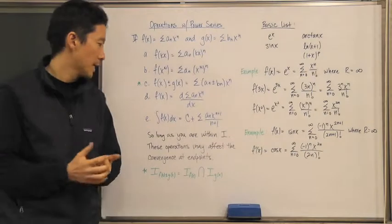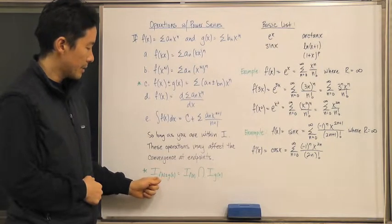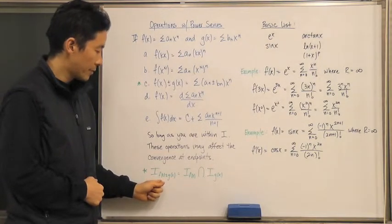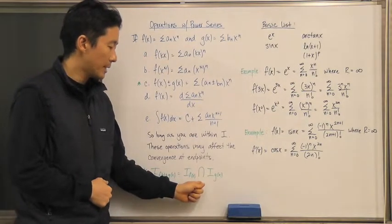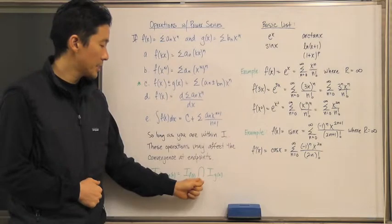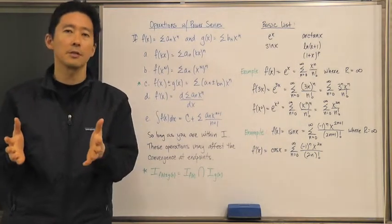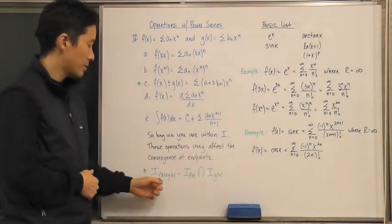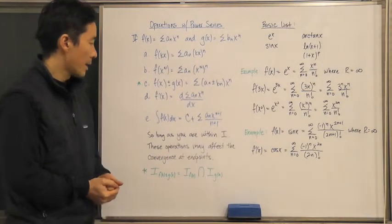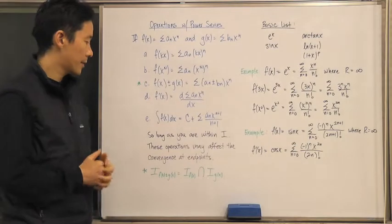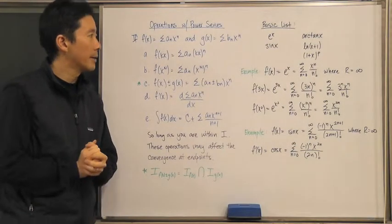The operation we have to pay particular attention to is addition or subtraction, since it involves two different power series expansions of two different functions. When considering the interval of convergence of f(x) plus g(x), we need to look at the individual intervals of convergence and take their intersection, because it's only at that intersection where the sum or difference of the two functions will actually remain equal.